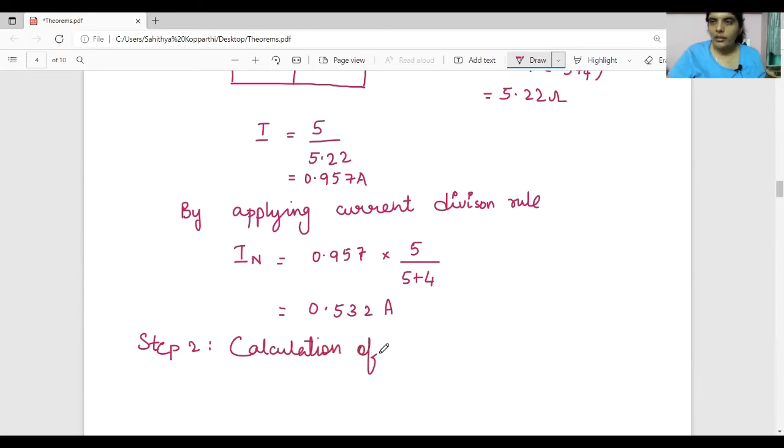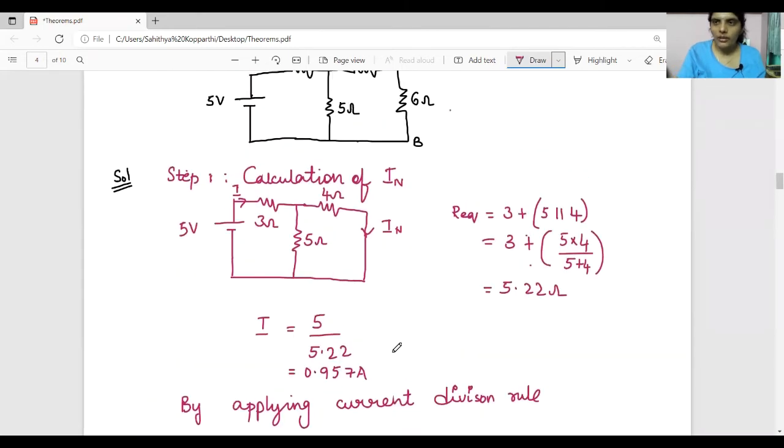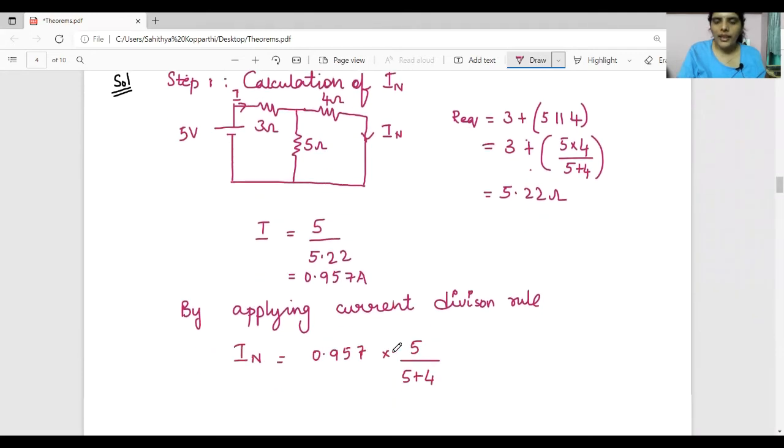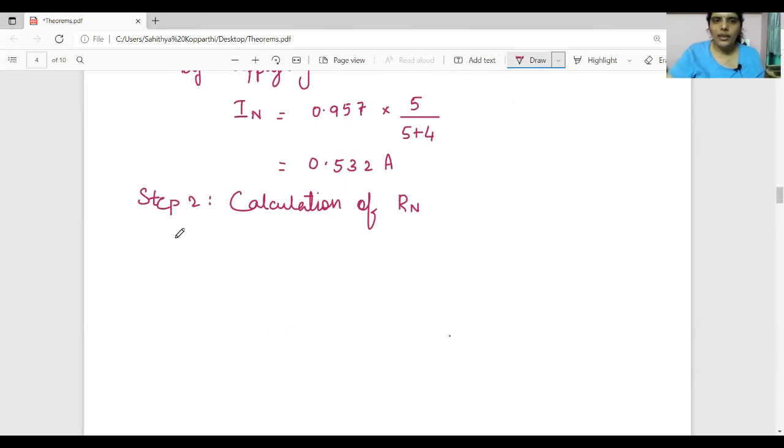In order to calculate Norton's resistance, you have to deactivate the independent source present in the network or circuit. So there is only one independent source present in the network, that is 5 volts. So short circuit it and you have to calculate Norton's resistance seen from the terminals, that's point A and B. Short circuit the 5 volts voltage source.